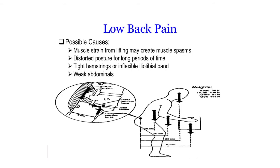Low back pain is one of the most common, if not the most common, complaint in orthopedics, along with knee injuries or some type of shoulder injury. Potential causes of low back pain include muscle strain from lifting that can cause either a spasm or a slight tear, distorted posture for long periods of time — which is by and large one of the most common reasons — tight hamstrings or tight IT bands, and also weak abdominals.